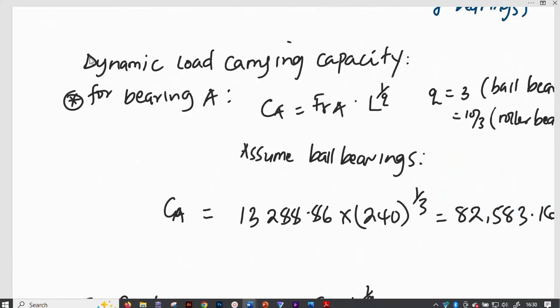Then the dynamic load carrying capacity is for bearing A, we can define it from FRA times L to power 1 over Q. If we have it as C, then it is always equal to P times L to power 1 out of Q. Whereby C is the dynamic load carrying capacity. P is the equivalent load carrying capacity of the bearing and L is the number of hours or the service life of the bearing actually in million revolutions.